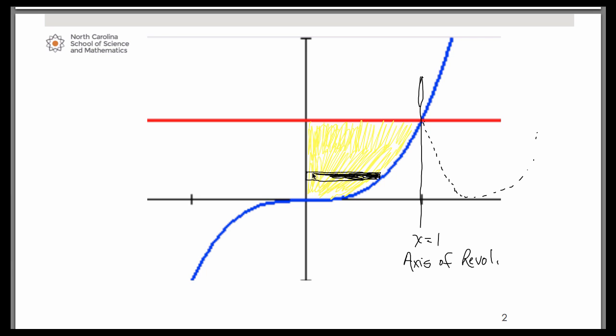But notice the representative rectangle is not touching the axis of revolution. That is the major difference between the washer method and the disk method.